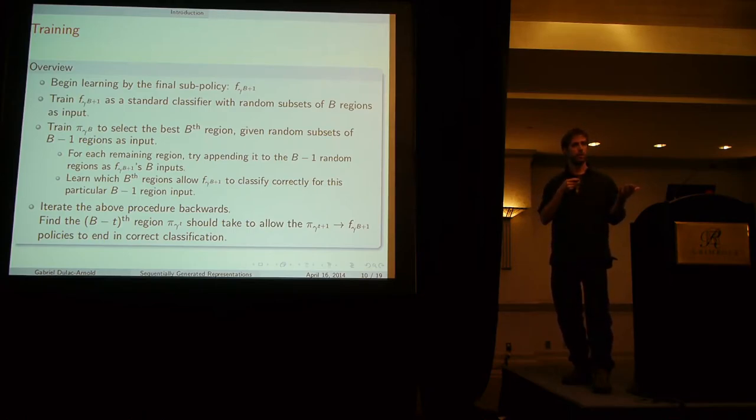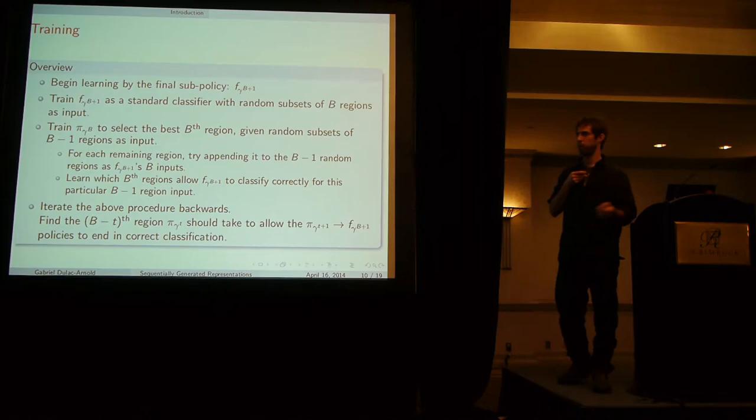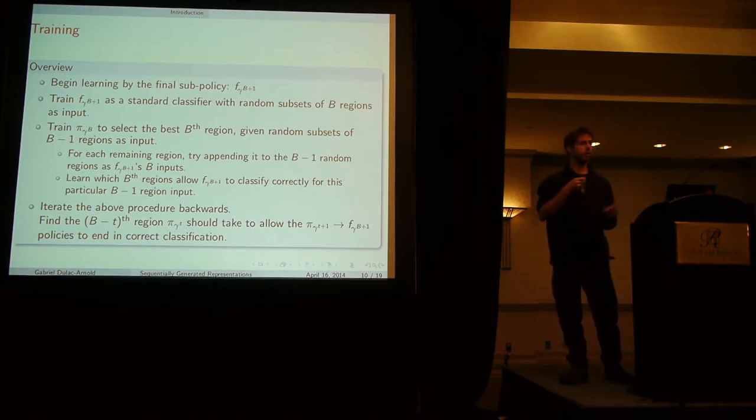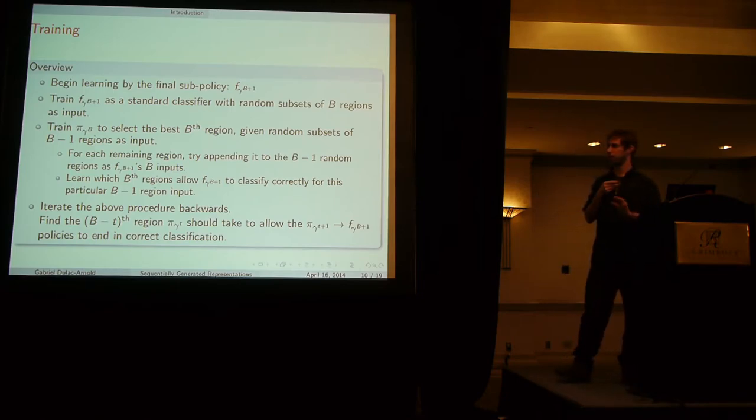That's going to basically take nine regions and find the best complementary tenth region given the nine random regions. We back this up one by one, and each classifier is going to be able to take T regions and find the best T plus first region that's going to allow us to classify the best. We do this all the way back to the beginning, and that gives us the initial classifier, or initial sub-policy.